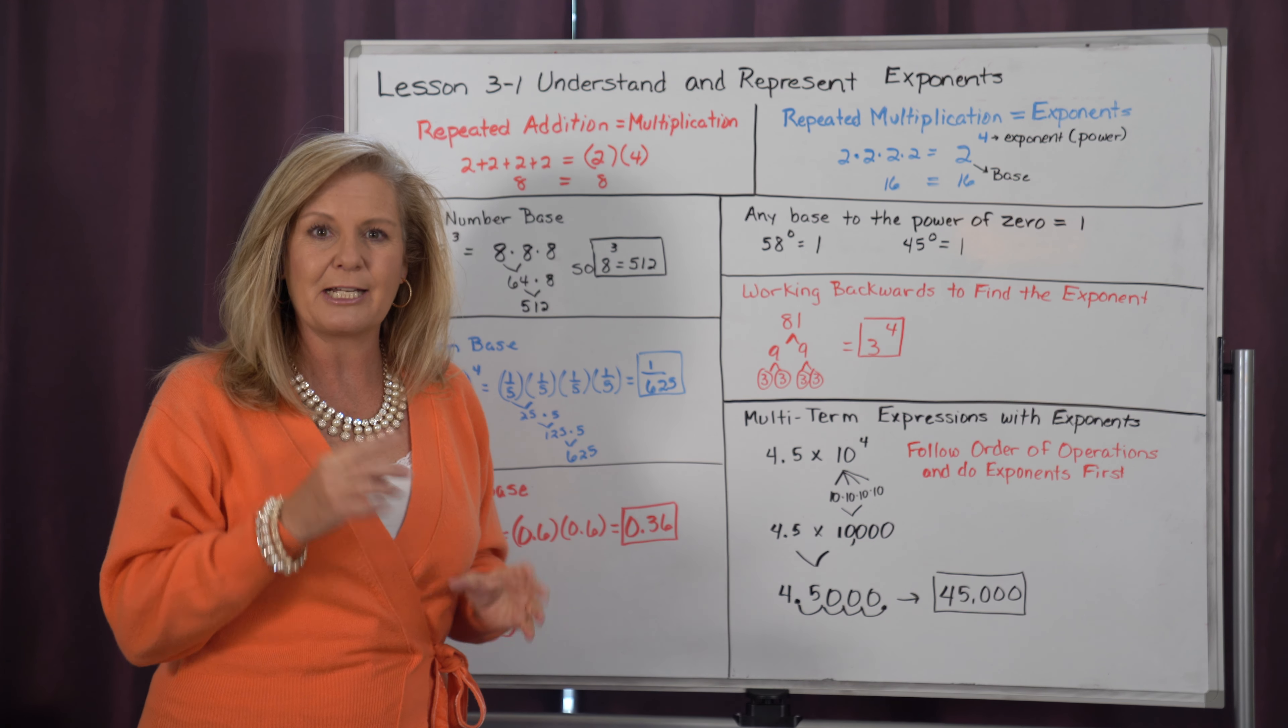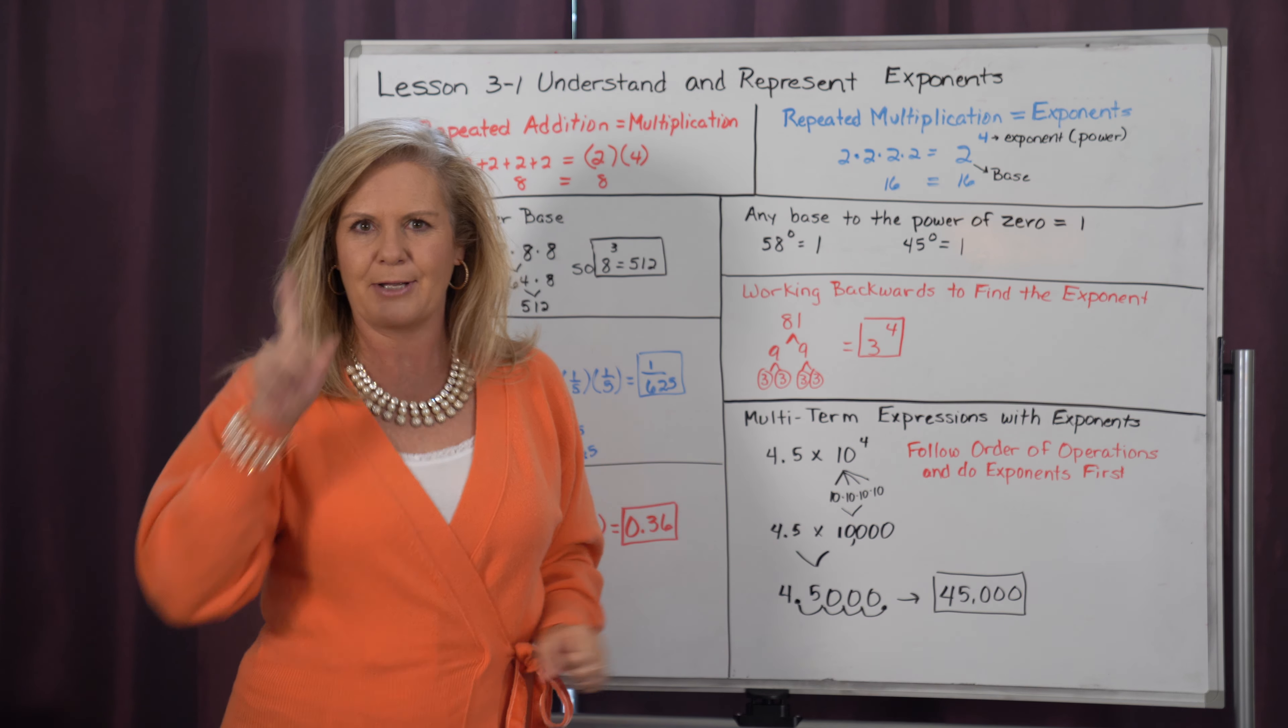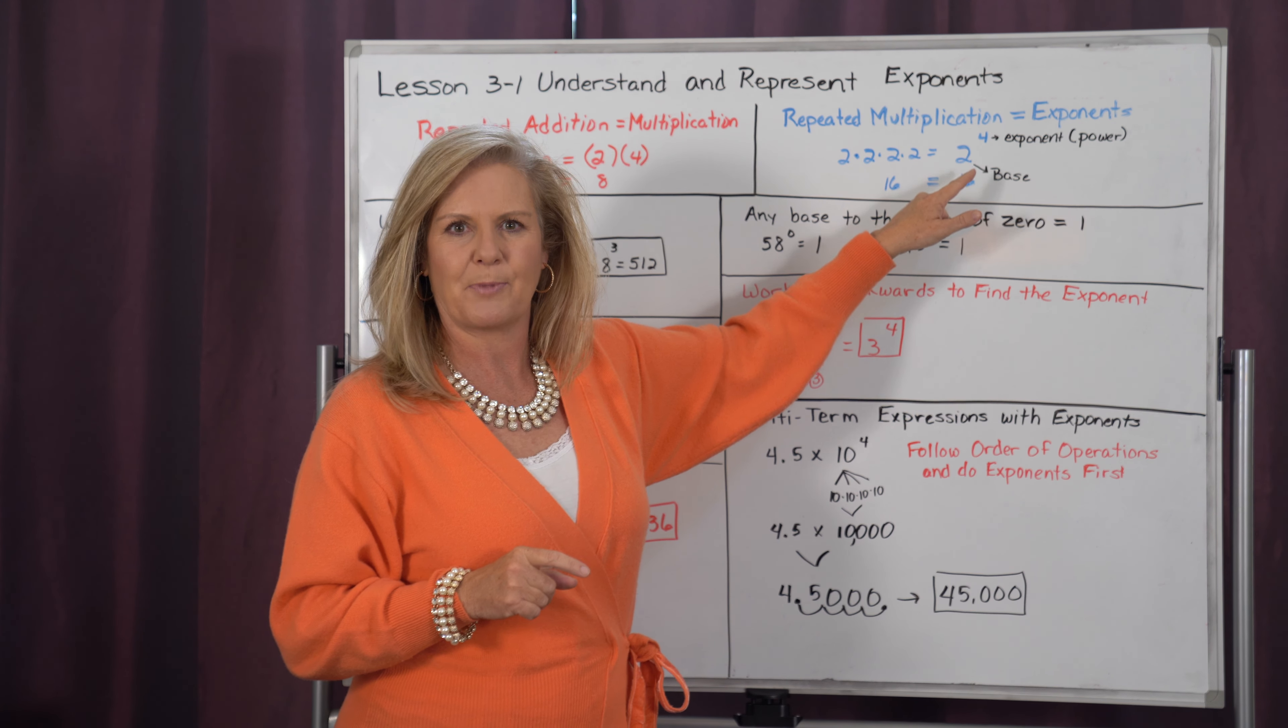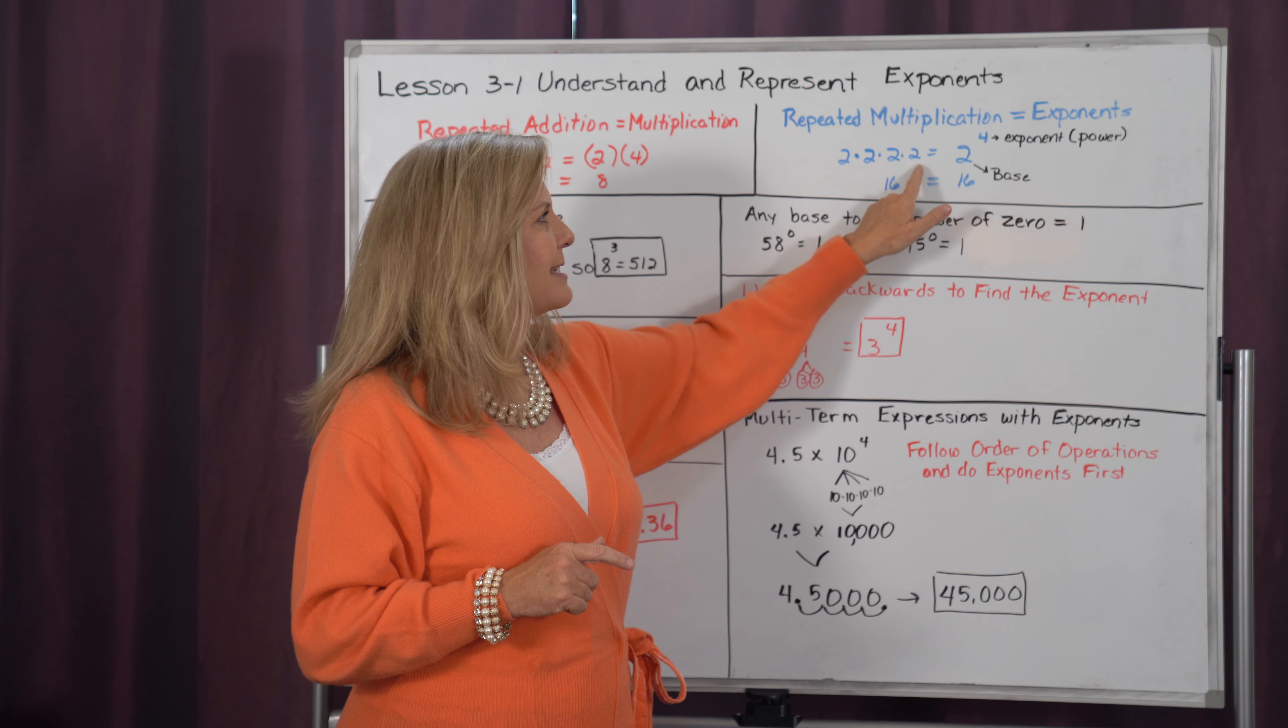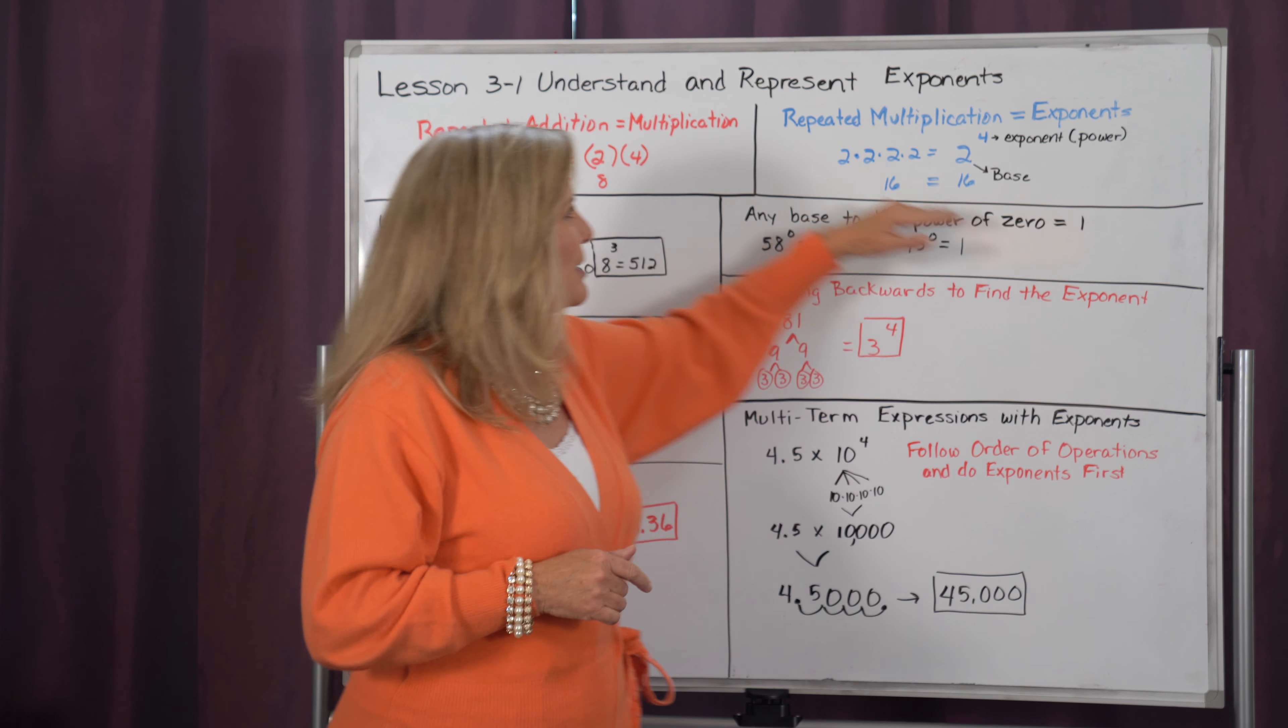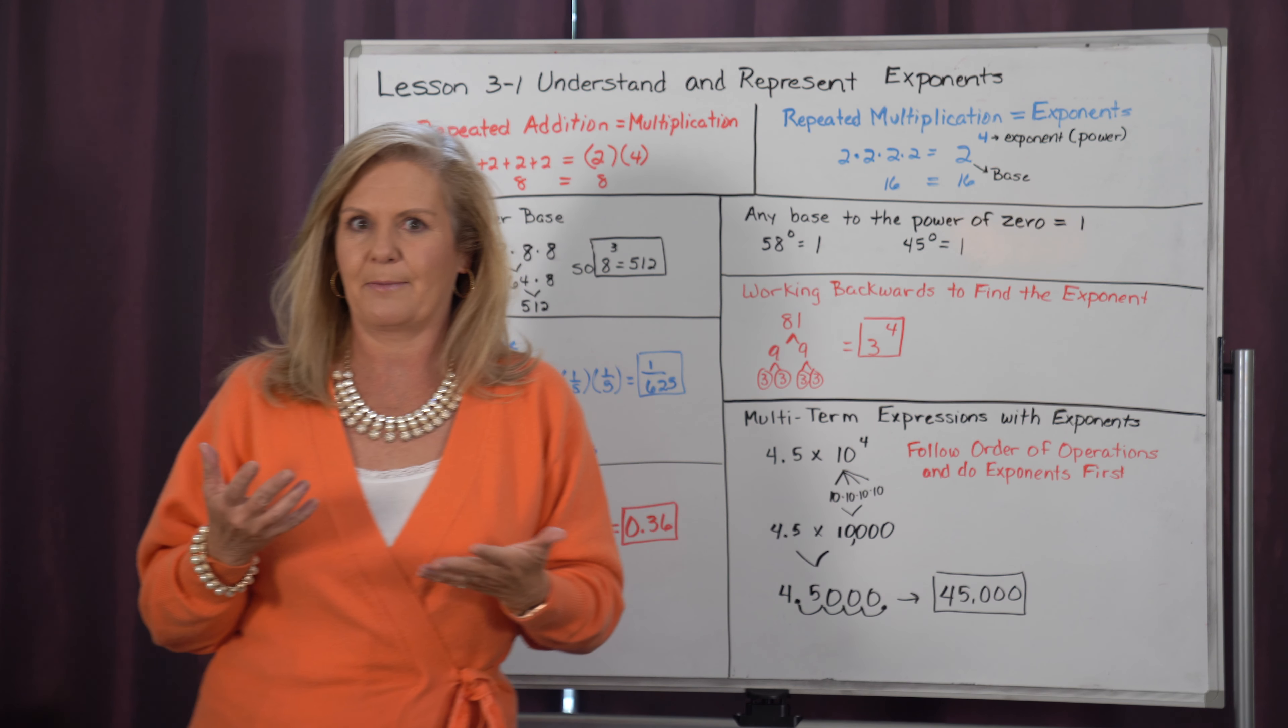Now, the difference is exponents deal with repeated multiplication. So if I had 2 times 2 times 2 times 2, it takes way too long to write that out. So mathematicians said, how can we make this easier, but it has to look different than multiplication. They came up with this idea of exponents. Whatever is repeatedly multiplied is called our base. So in this example, 2 would be our base. And the number of times it's repeatedly multiplied is our exponent, which we sometimes call power. Since I have 2 multiplied 4 times, I do 2 to the 4th power. And notice, they equal the same thing.